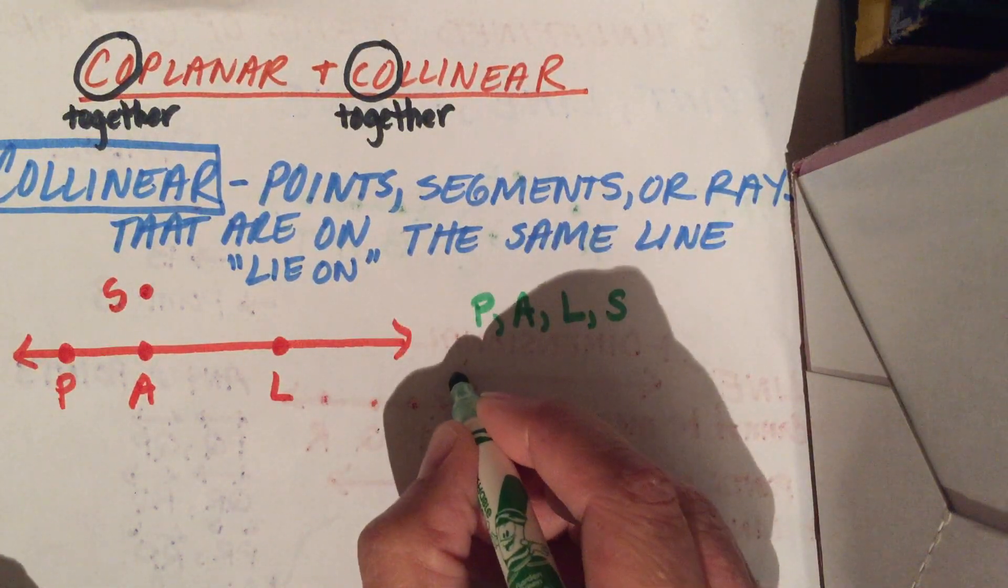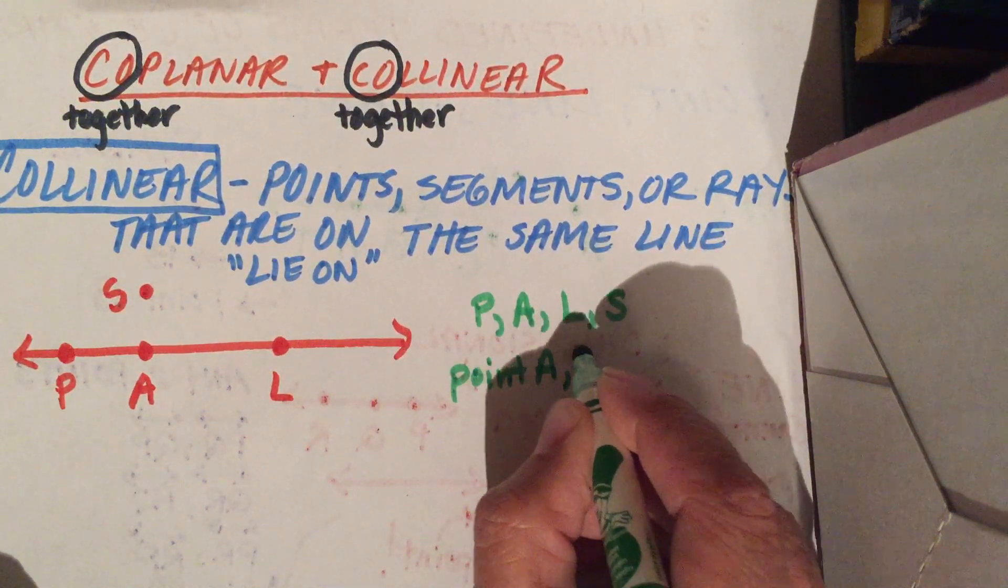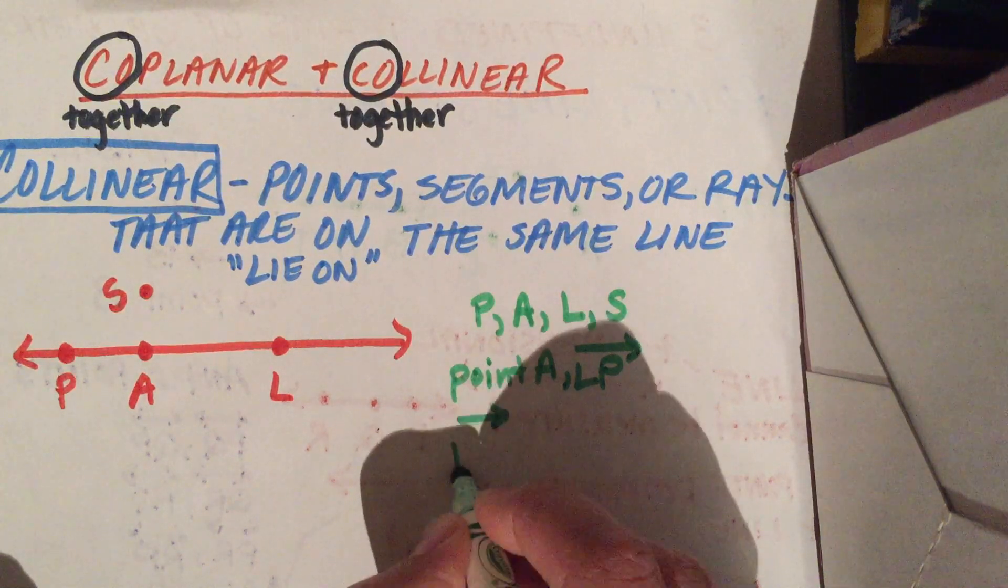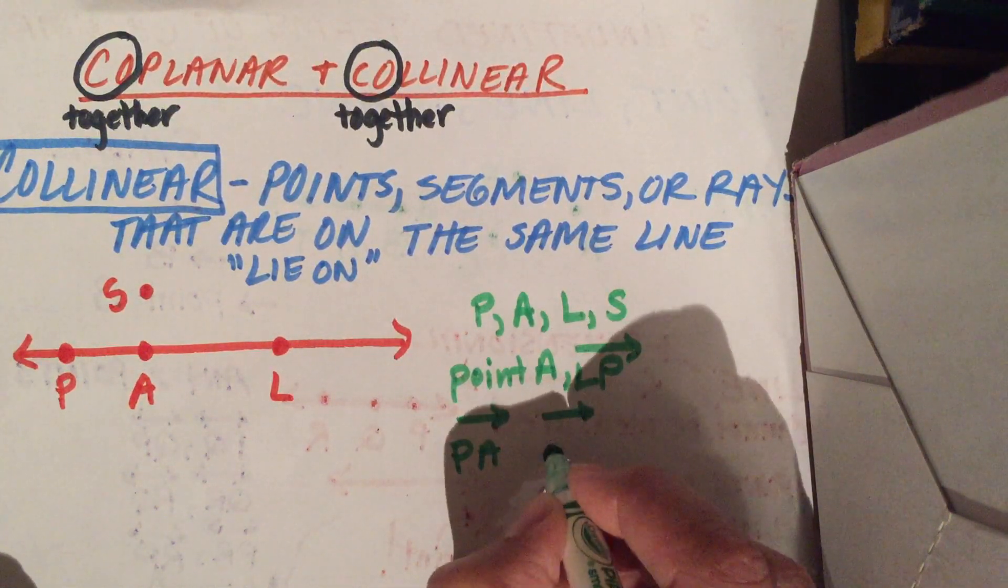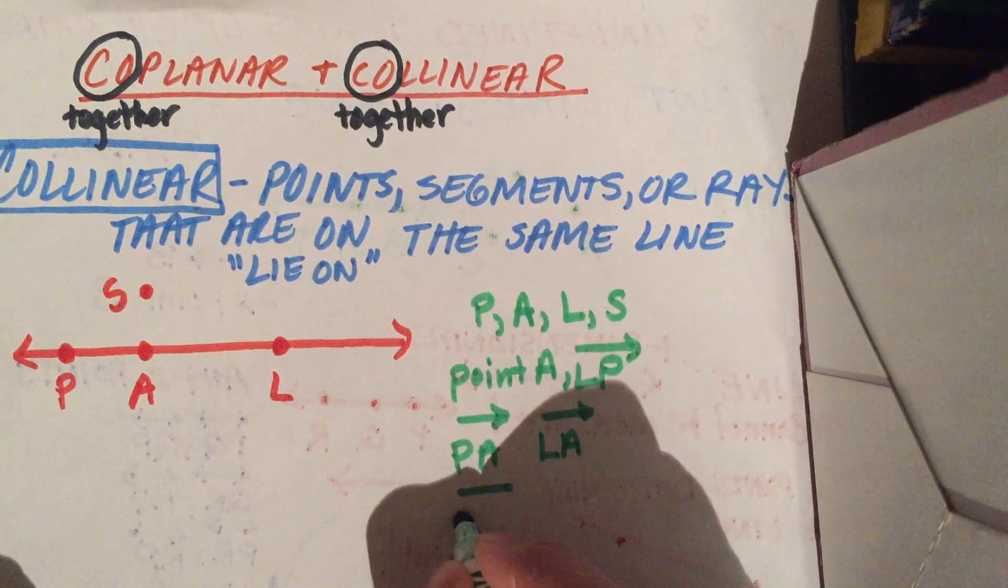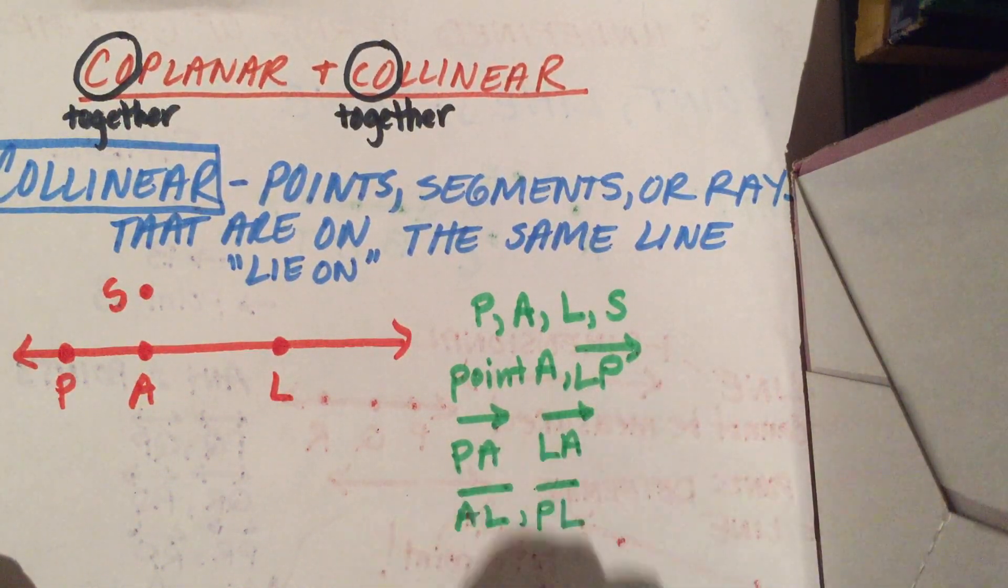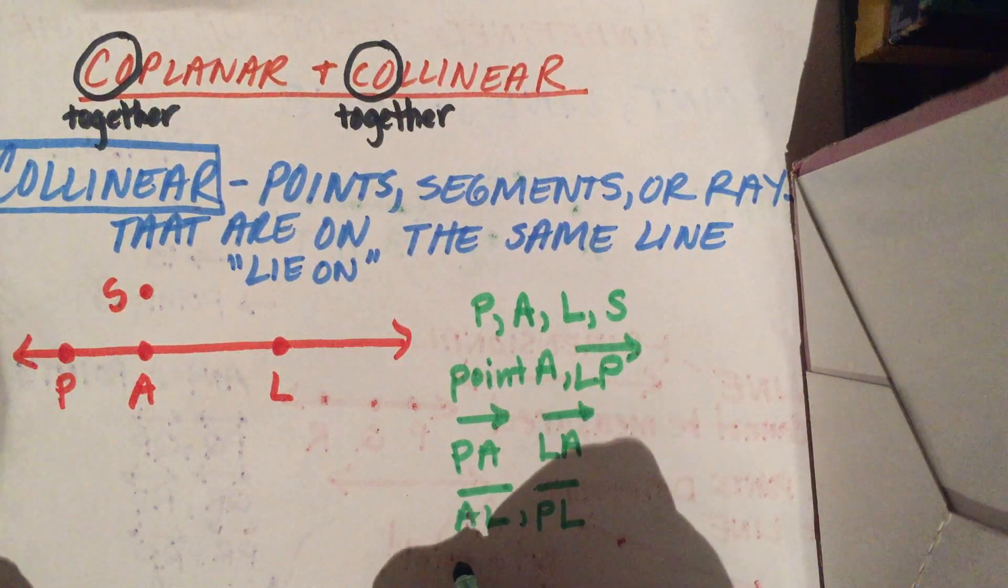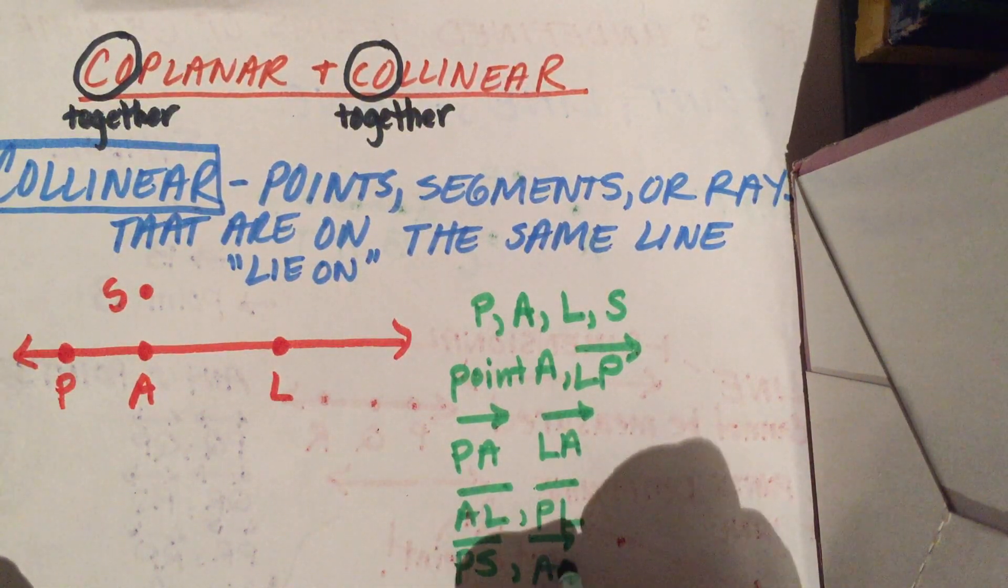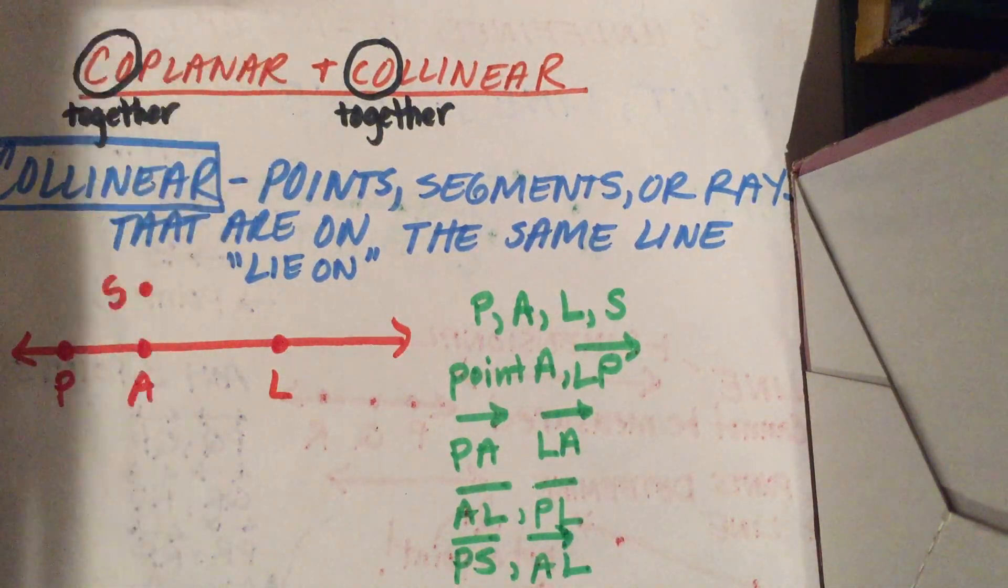We'll look at point A and ray LP. We'll look at ray PA and ray LA. We'll look at segment AL and segment PL. We'll look at segment PS and ray AL. Let's determine if these are collinear.